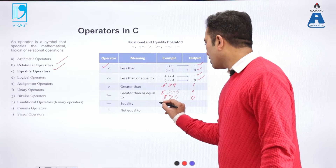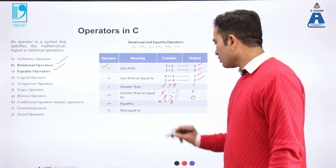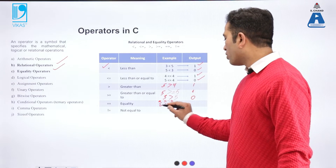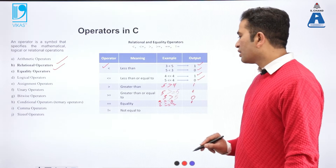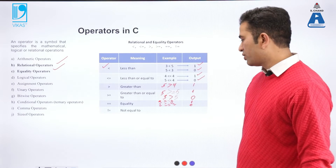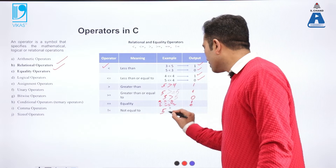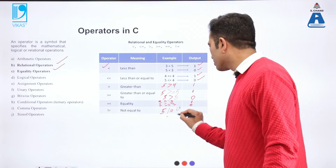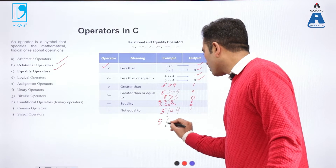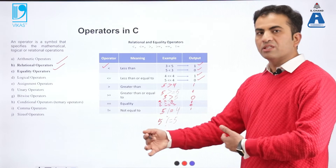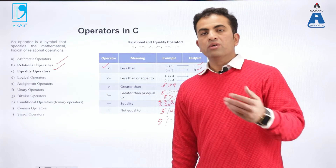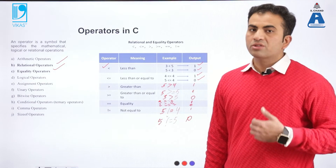Equality means x equal to equal to y. If the value of x is 2 and the value of y is also 2, both values are equal, so the output will be 1. If it is 1 equal to equal to 2, the output will be 0 because it is false. Not-equal-to: if 5 is not equal to 4, that is true, so the output is 1. If 5 is not equal to 5, it is false because 5 equals 5, so the output is 0. In relational and equality operators, the output comes in the form of 1 and 0.